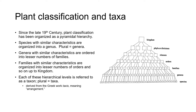As mentioned in an earlier unit, since the late 19th century plant classification has been organized as a pyramidal hierarchy. At the bottom of the hierarchy, species with similar characteristics are ordered into a genus — and remember that the plural of genus is genera. Genera with similar characteristics are ordered into lesser numbers of families, and so on all the way up to kingdom.